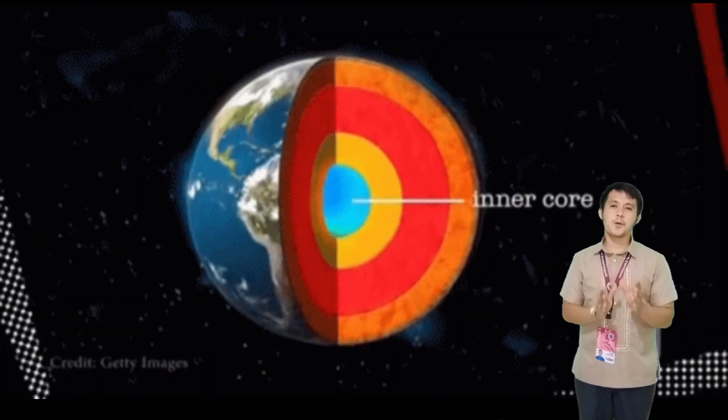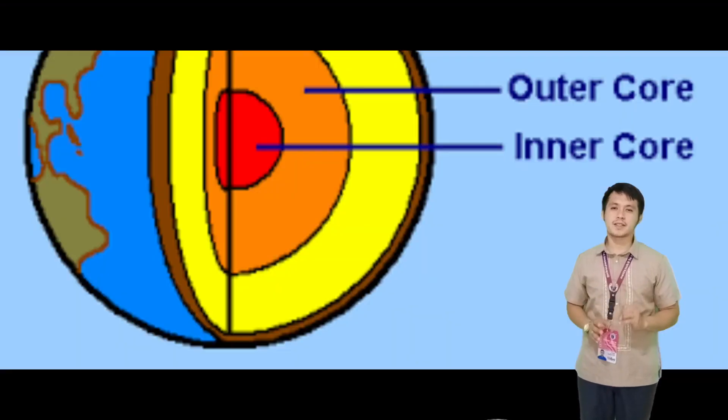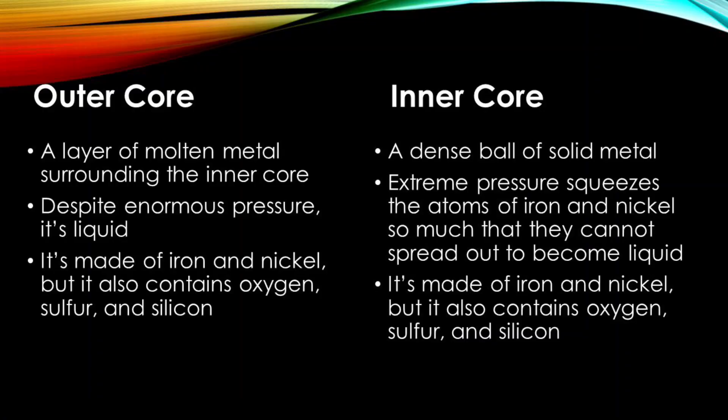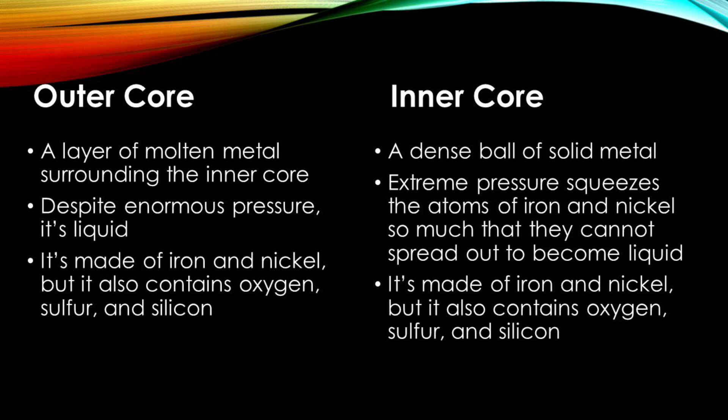The Earth's core is divided into two parts: the inner core and outer core. Both are made mostly of iron and a little nickel and some other chemical elements. The main difference between the two is that the outer core is liquid and the inner core is solid.